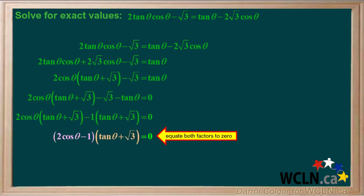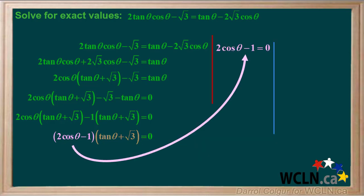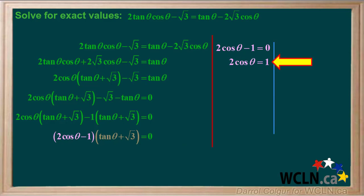We can solve this equation by equating both factors on the left to 0. We'll start with the first factor, 2 cos theta minus 1 equals 0, and simplify the equation. Adding 1 to both sides gives us 2 cos theta equals 1, so cos theta equals positive 1 half.